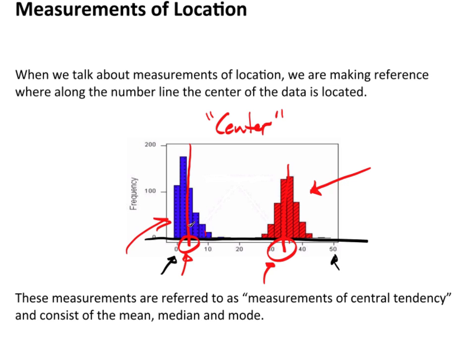Very commonly when we're making comparisons between two groups, that's exactly what we're doing. We're looking at the center for one group, the center for the other group, because quite often we think of the center of the distribution as the most typical values and we make a comparison between the centers.